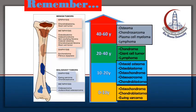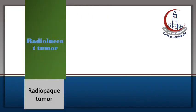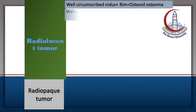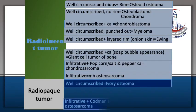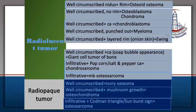Here is a comparative scheme for all the bone tumors regarding the age at presentation and the site of affection of the bone, whether it is epiphyseal, metaphyseal, or diaphyseal. There is also a table for differentiation between different tumors by radiology, either being radiolucent or radiopaque, to help study and compare tumors.